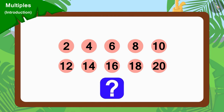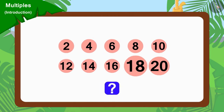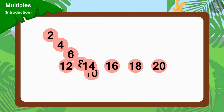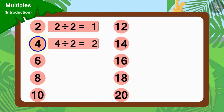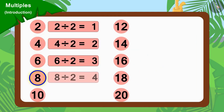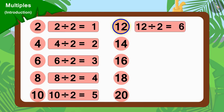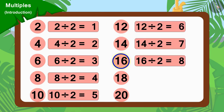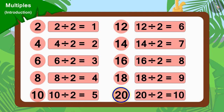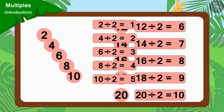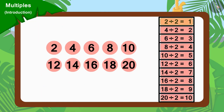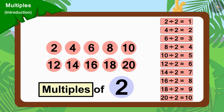Children, do you see anything special in these numbers? Yes, we can divide all these numbers by 2. Numbers that can be divided by 2 are multiples of 2. In this way, 2, 4, 6, 8, etc. are multiples of 2.